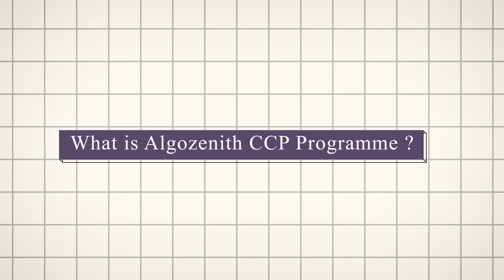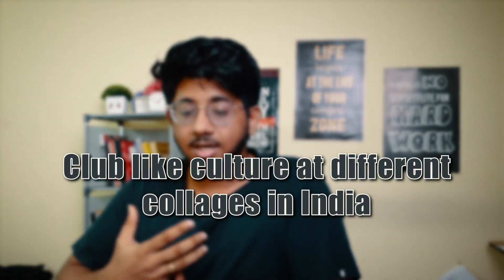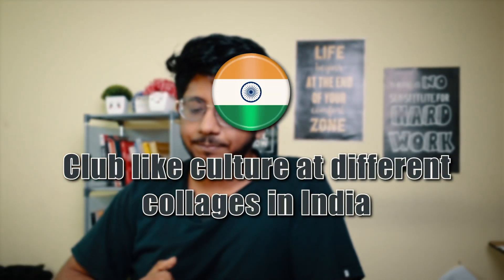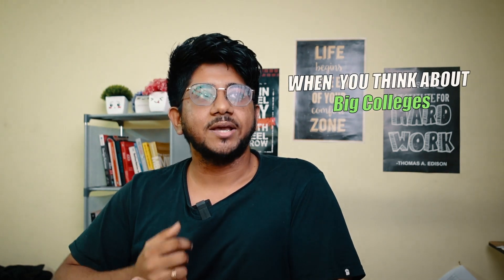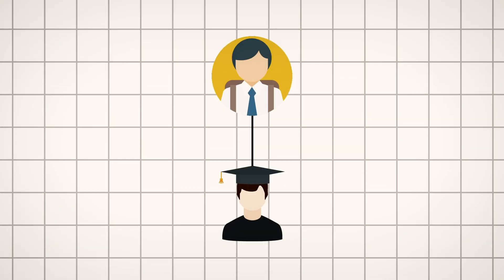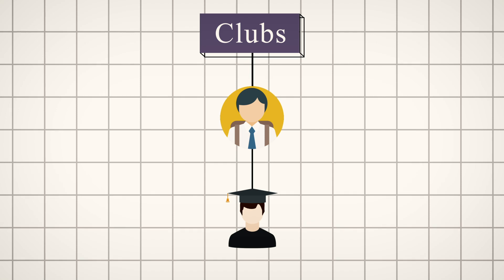So first of all, what is the Algo Zenith CCP program? The Algo Zenith CCP program is a social initiative to build a community where we want to build an awesome club-like culture at different colleges in India. When you think about big colleges, most of them have a really good talent pool and students are skilled, getting good placements because of the clubs they have. These clubs nurture first and second year students in a nice way so they are trained to get into the fields they want, with really good resources provided to juniors to amp up their skills at the correct point in time.